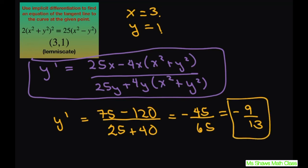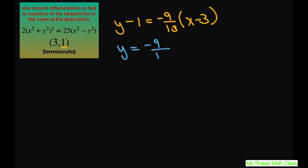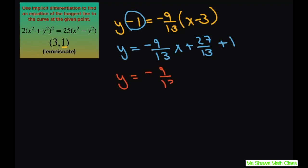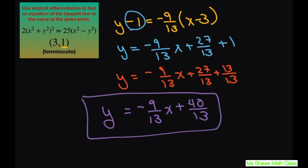So negative 9 thirteenths is your slope. Now we can write our equation of the line using point-slope form: y minus 1 equals negative 9 thirteenths times x minus 3. Simplifying: y equals negative 9 thirteenths x plus 27 thirteenths plus 1. Since 1 equals 13 thirteenths, this gives us y equals negative 9 thirteenths x plus 40 thirteenths. That's your equation of the line. Thank you, have a nice day.